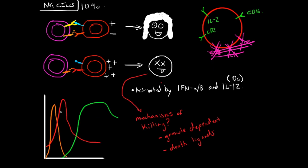As I mentioned, they're the first line of defense. On a graph of activity versus days after a viral infection, we can see interferon alpha and beta levels, natural killer cell activity, and cytotoxic T lymphocyte activity plotted over time.